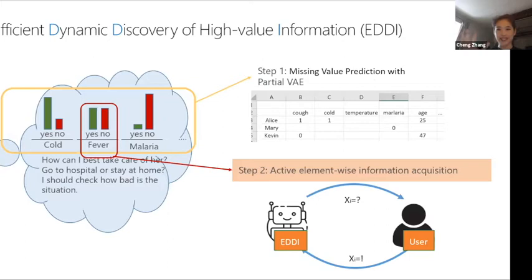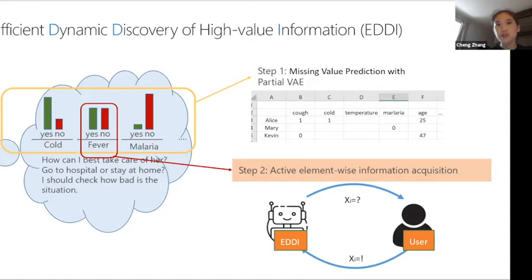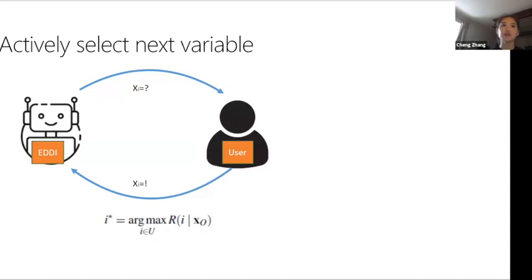Now that we have partial VAE for predicting missing values probabilistically and flexibly, the next step is to behave like Bob — choosing which question to ask, which feature to acquire. This is active element-wise information acquisition in a personalized manner. We want to choose a question i* that is argmax of some information reward R given the current observations X_O: given what we already know, what is the best question to ask next?